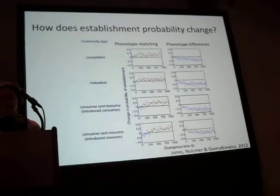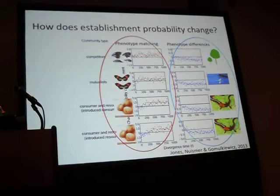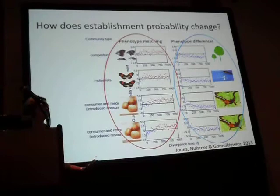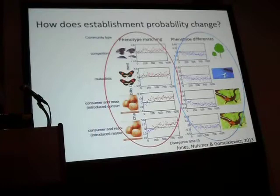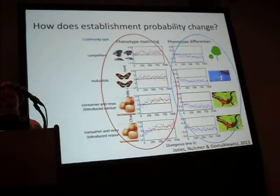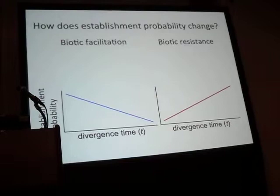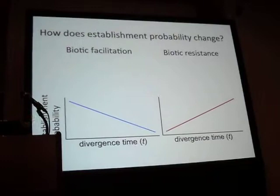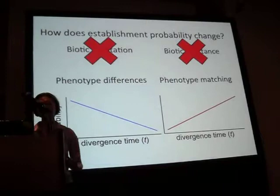What really matters is the interaction mechanism underlying co-evolution in those communities. Whenever we had a case of phenotype matching, regardless of the community type, we saw an increase in establishment probability with phylogenetic distance. And we saw the reverse — a decrease in establishment probability with phylogenetic distance — whenever there were phenotype differences underlying interactions. We see the same patterns predicted in Darwin's naturalization conundrum, but instead of depending on the kinds of interactions, it really depends on the mechanisms underlying those interactions.